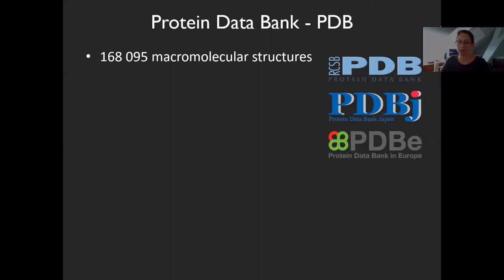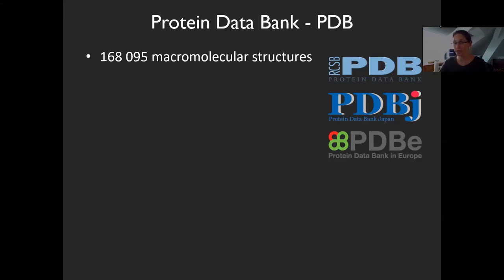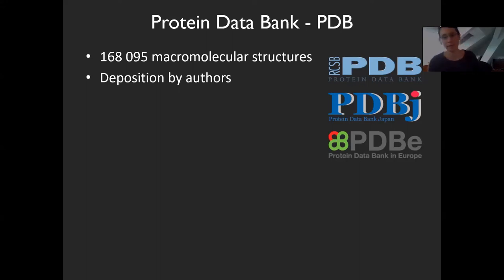As of today there are roughly 170,000 macromolecular structures in the PDB — these are biological structures: RNA, DNA, and most of all proteins, plus whatever was bound to these large biological macromolecules. We know 170,000 structures, and they represent a large, sizable portion of all the known folds. Many of them have an attached publication. The structures are deposited by authors — typically the people who did the purification, crystallization, measurement, integration, scaling, phasing, and refinement, and then arrived at the final structure.